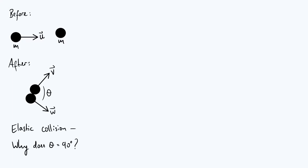Hello everyone. In this video I just wanted to share and prove a nice little result about elastic collisions between particles of equal mass in classical mechanics. The situation we're dealing with is that we initially have one particle moving with a velocity of u and another particle just sitting there stationary, and the mass of both particles is just m.